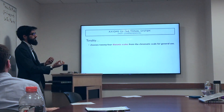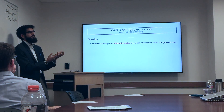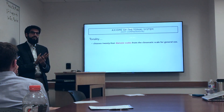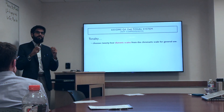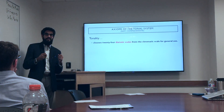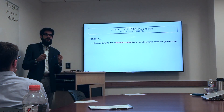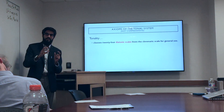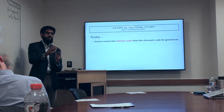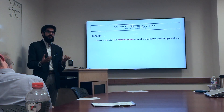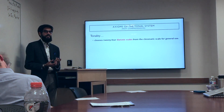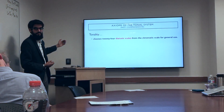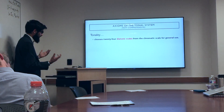A diatonic scale is comprised of five whole steps and two half steps such that the two half steps are maximally separated. That means there are seven species of diatonic scales, and since we have 12 starting pitches, we have 12 times 7 equals 84 possible distinct diatonic scales. Tonality chooses a subset of that 84 to arrive at 24.